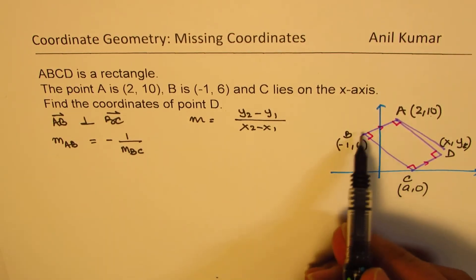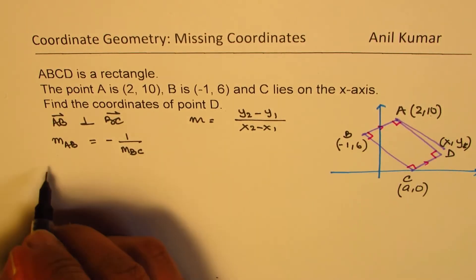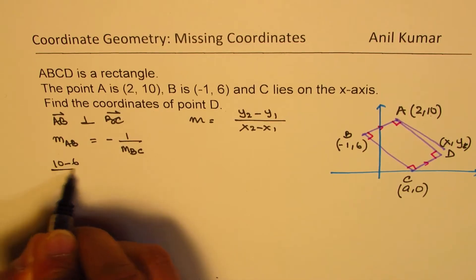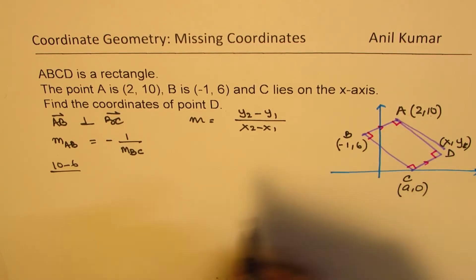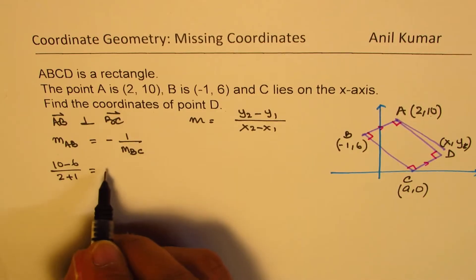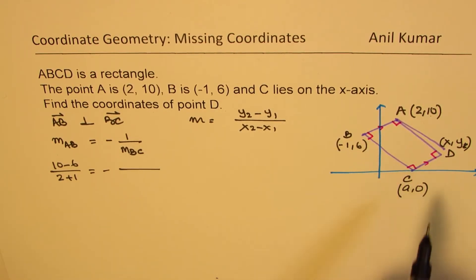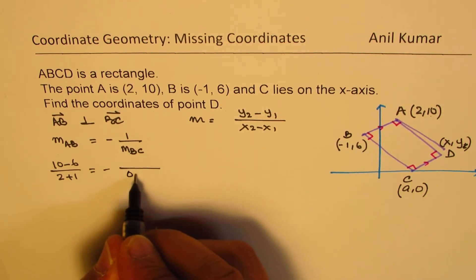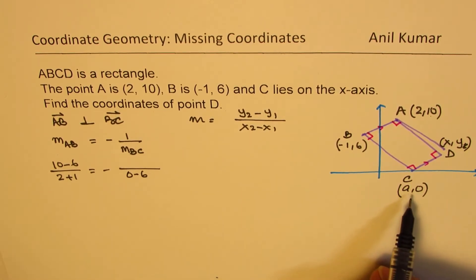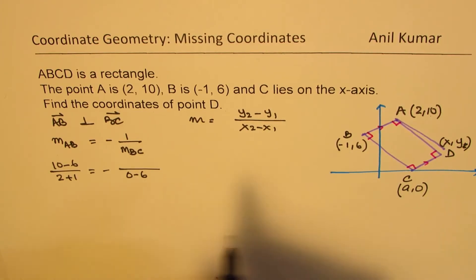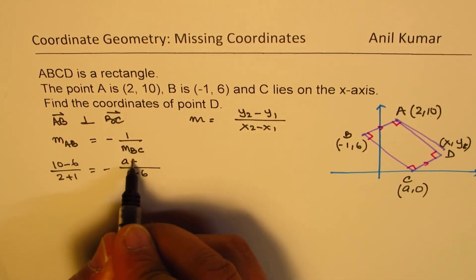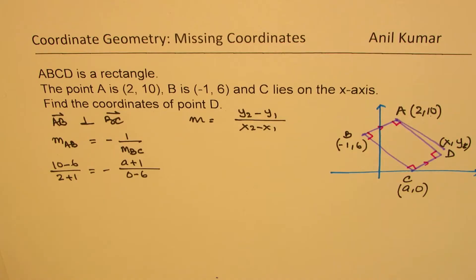So slope of AB could be (10 - 6) divided by (2 - (-1)), which is 2 plus 1, and negative m_BC. Slope of B to C, difference in y values, 0 minus 6. That comes in the denominator this time. A minus (-1) means A plus 1. So we get this.